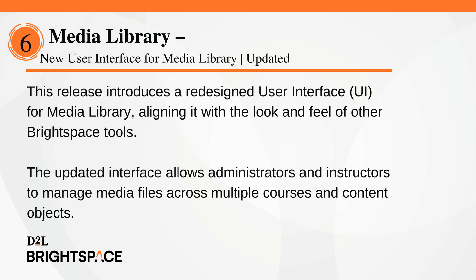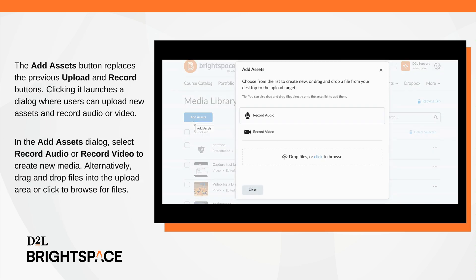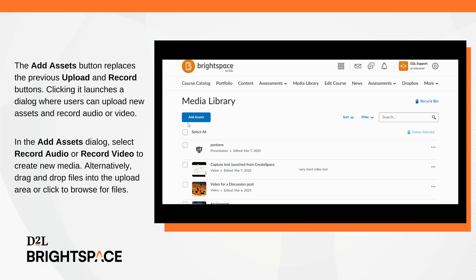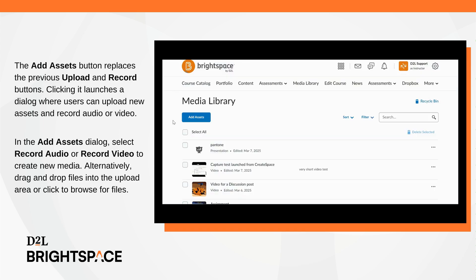This release introduces a redesigned User Interface, or UI, for Media Library, to manage media files across multiple courses and content objects. All the functionality of the old media library still exists, but is now presented in a modern way. The Add Assets button replaces the previous Upload and Record buttons. Clicking it launches a dialog where you can upload new assets and record audio or video. In the Add Assets dialog, select Record Audio or Record Video to create new media, or you can drag and drop files into the Upload area, or click to browse for files.